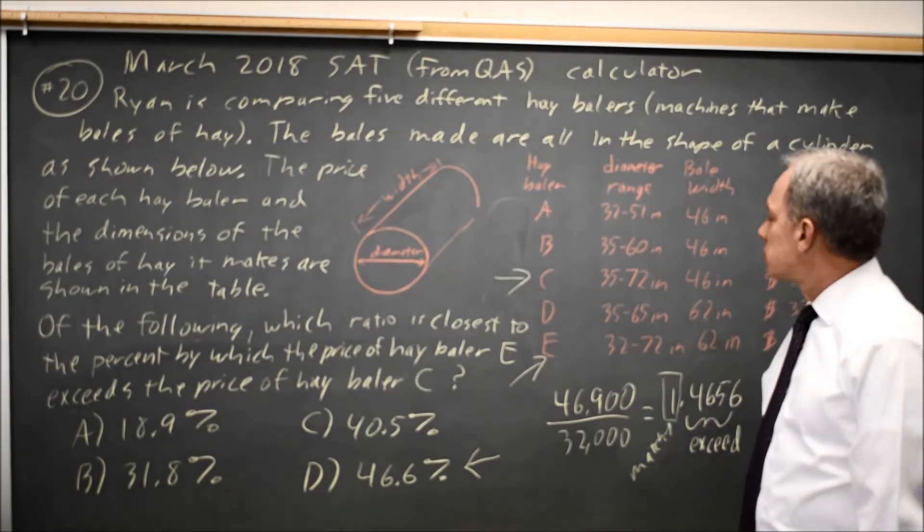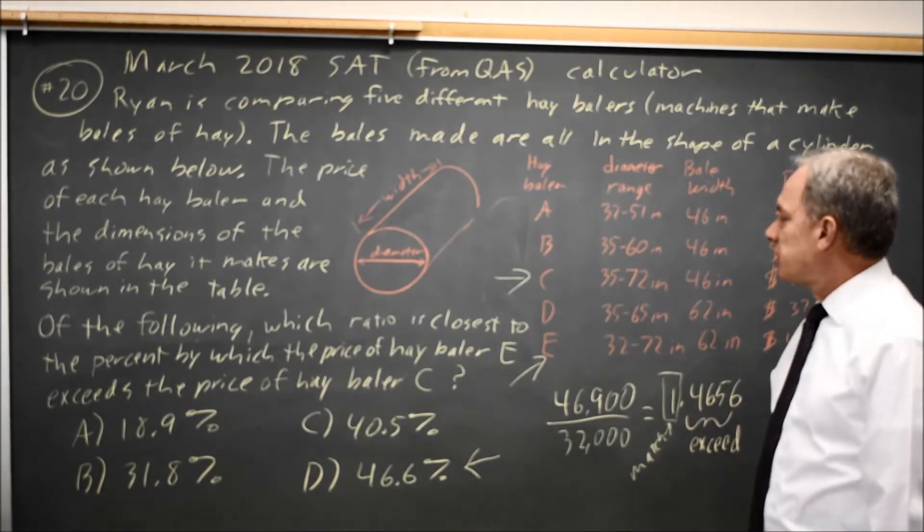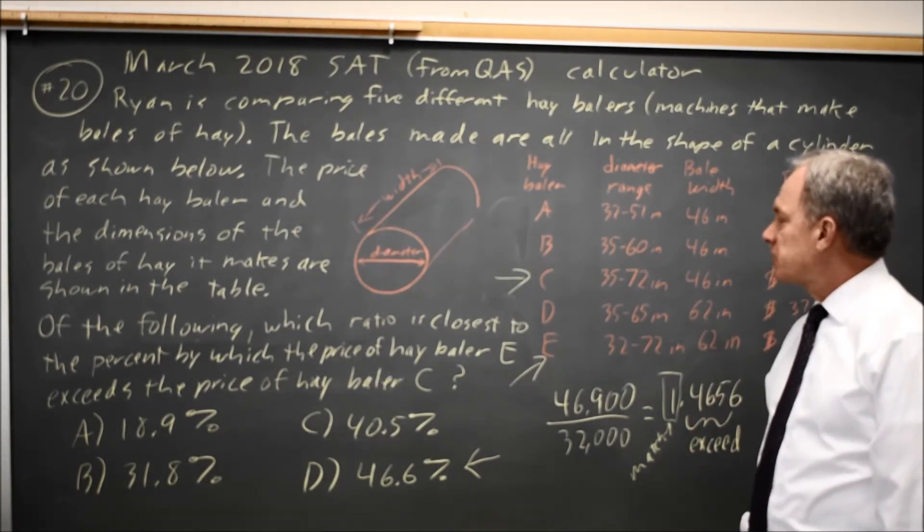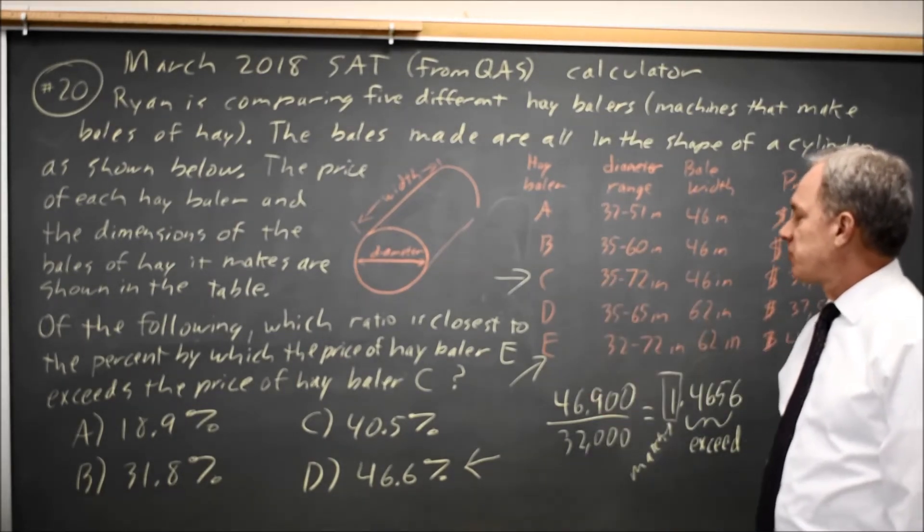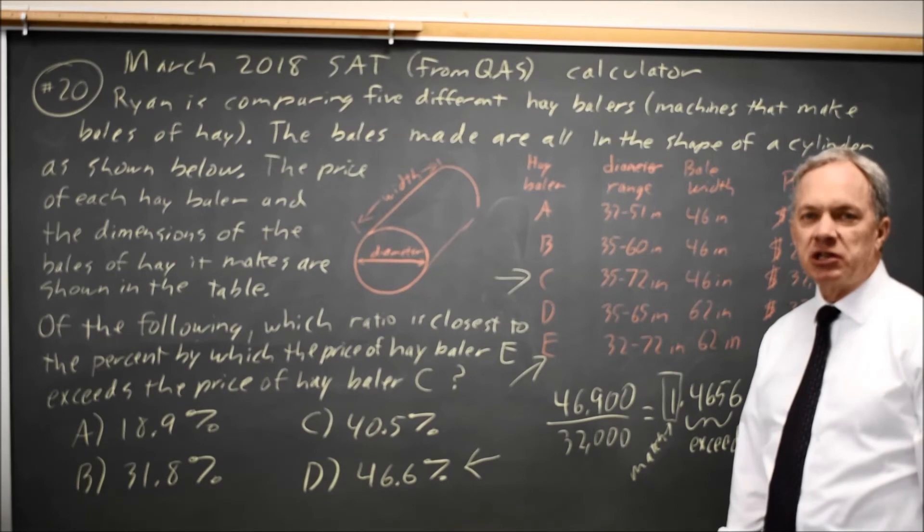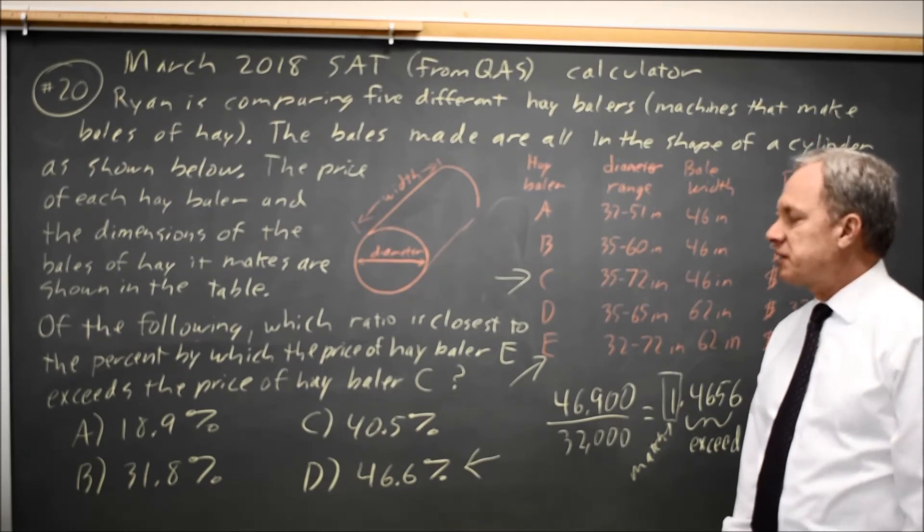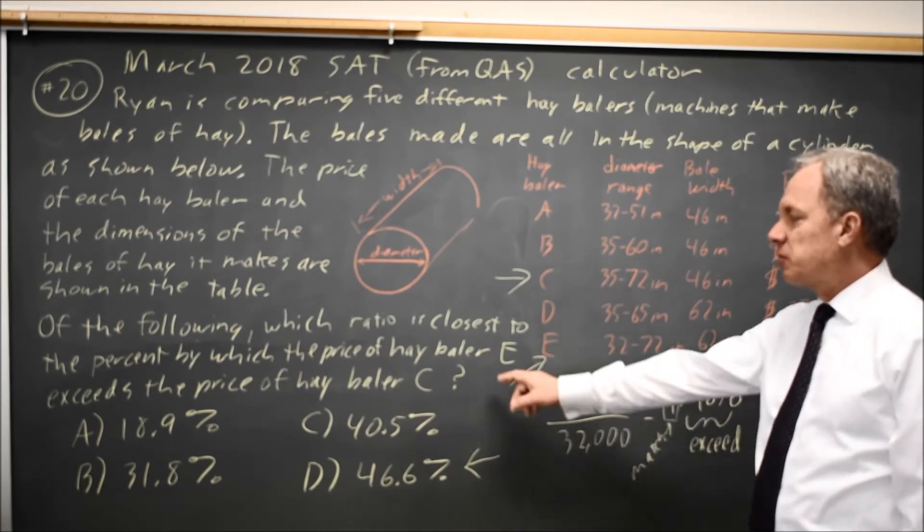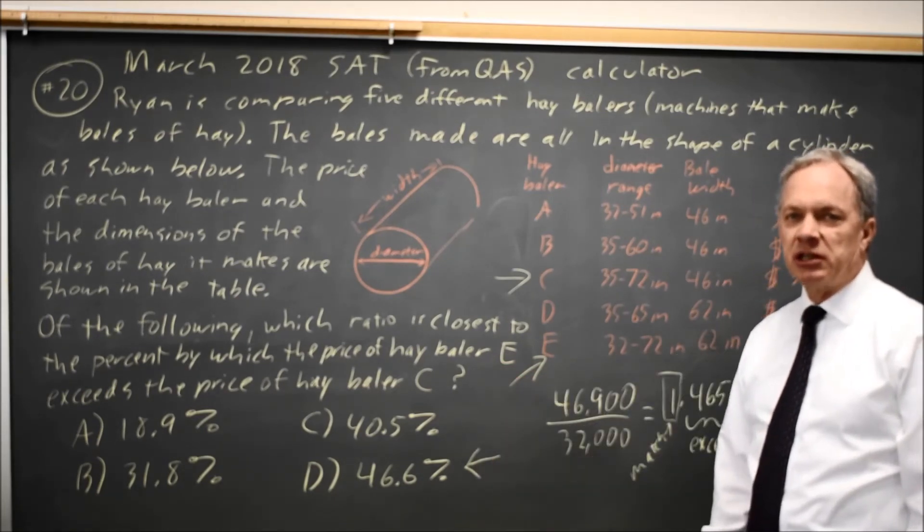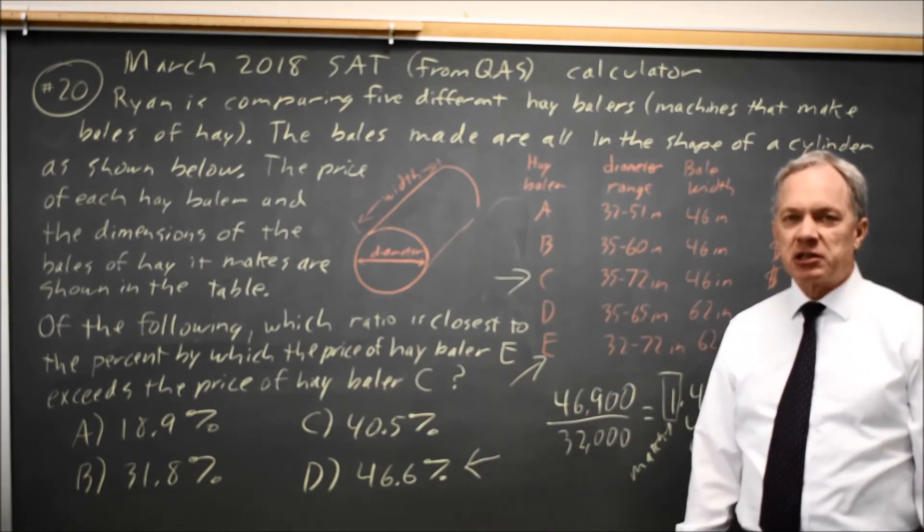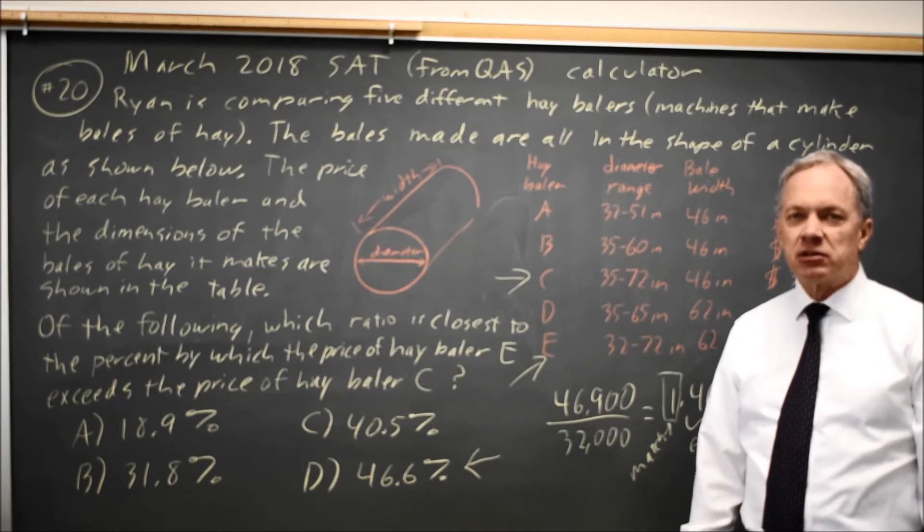If they wanted to reverse the ratio, they could ask what percent is the price of baler C of the price of baler E, and then E would be the denominator. But since they're asking about the percent by which you exceed hay baler C, C is the denominator in your fraction. That's probably the most challenging part of this question: correctly identifying which number is the numerator and which number is the denominator.